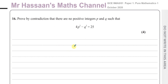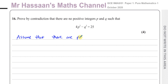This is a new topic in the syllabus that was introduced since the first paper, which was in 2020. It says: prove by contradiction that there are no positive integers P and Q such that 4P² minus Q² equals 25. So in this particular question, when you're proving by contradiction, you have to assume that there are positive integers such that 4P² minus Q² equals 25.